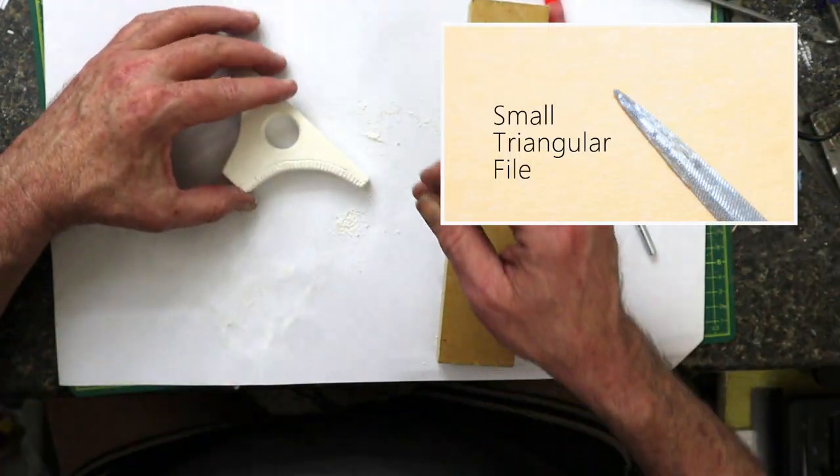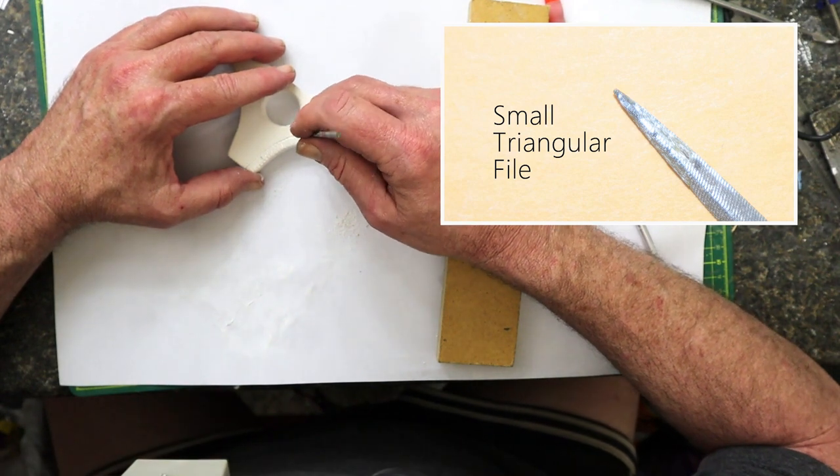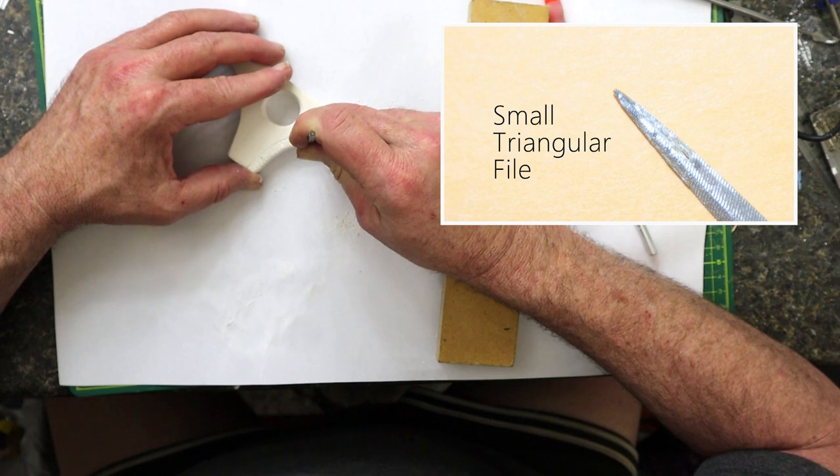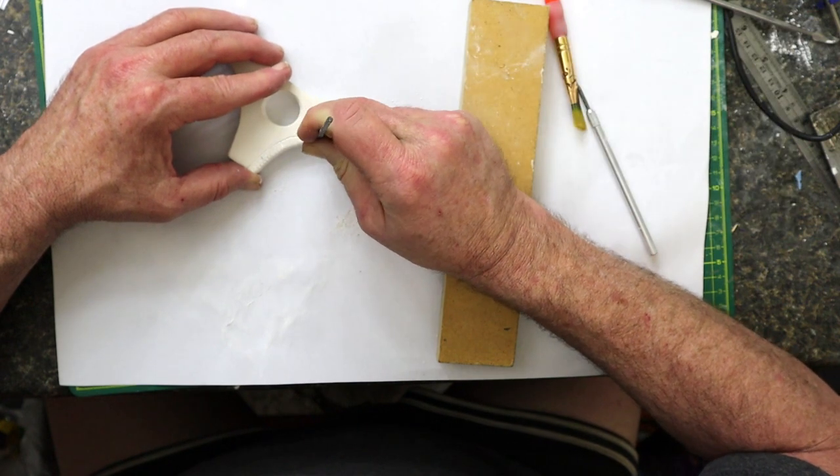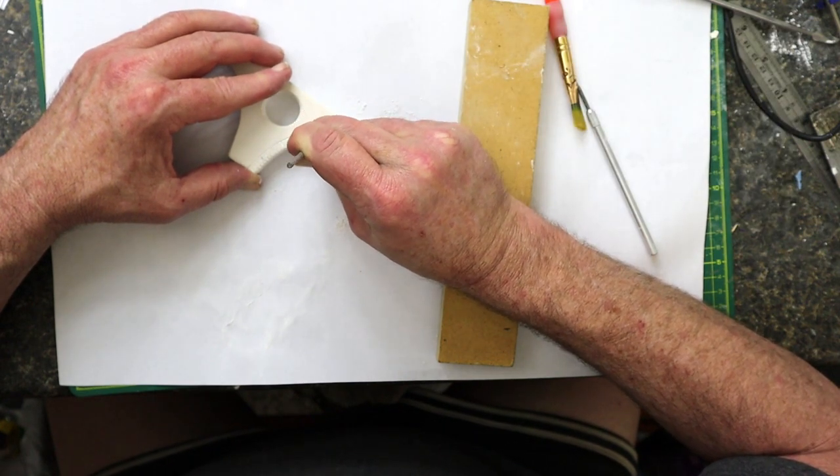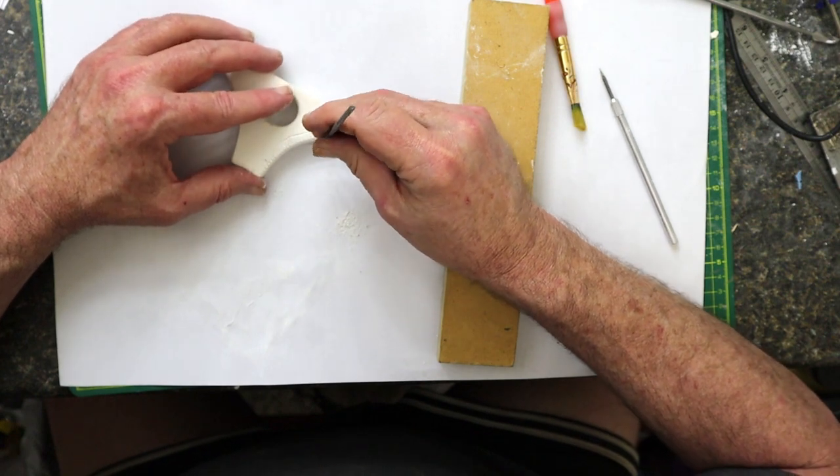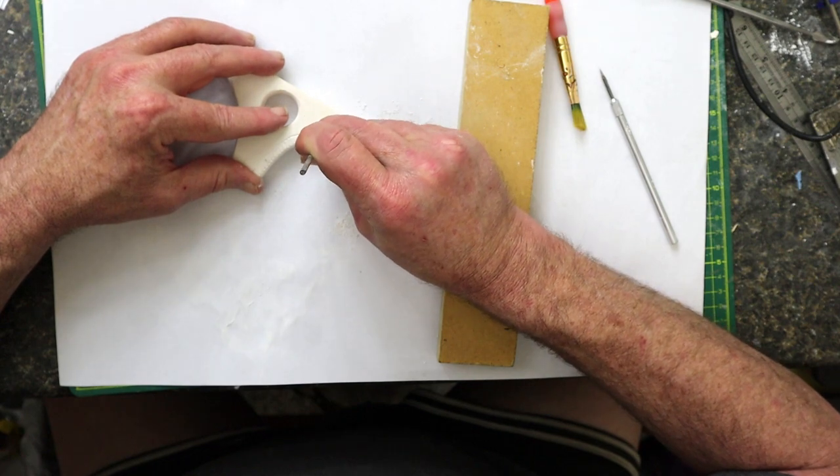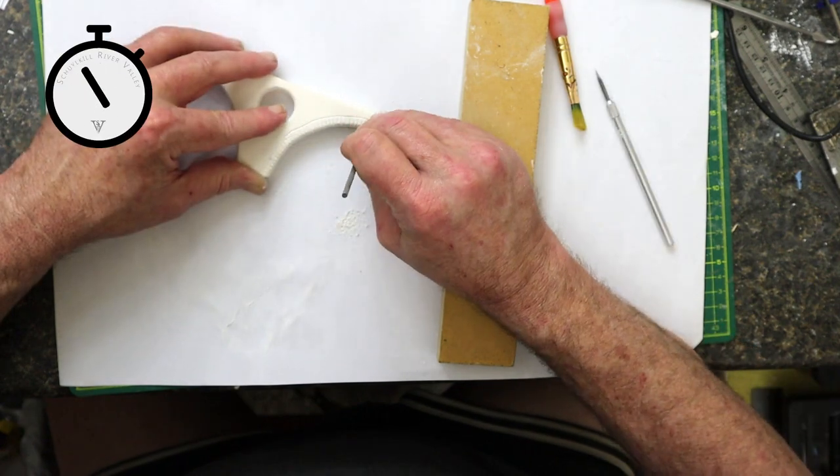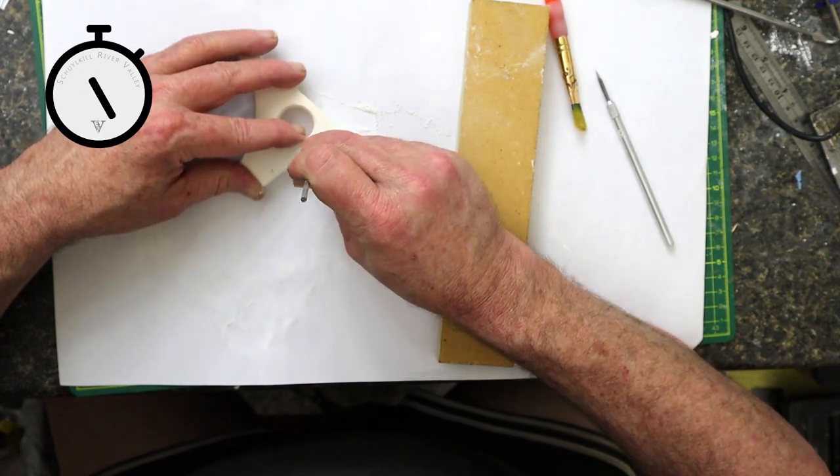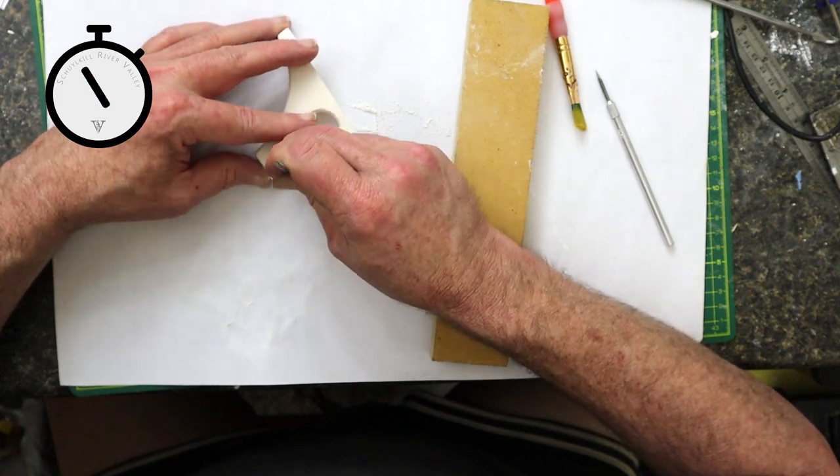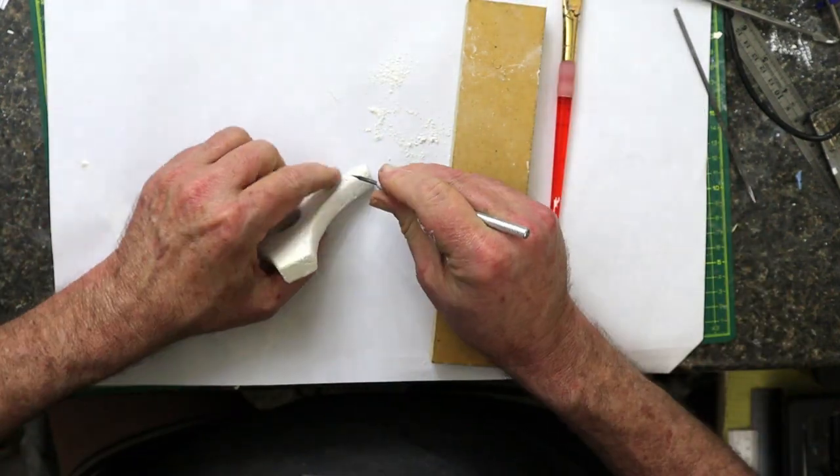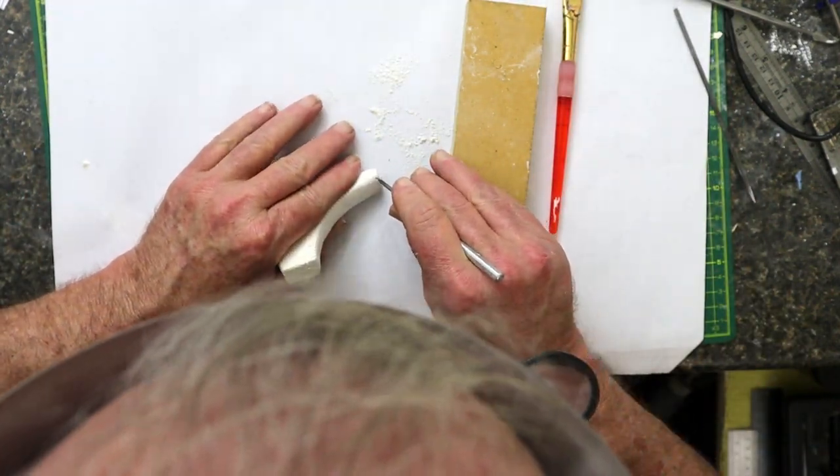Here I'm using a small triangular file to etch a guide down the side of the casting. I line these guides up with the carvings I just made. This will make it easier to carve the joints. Once again, I use the scribe to carve the joints.